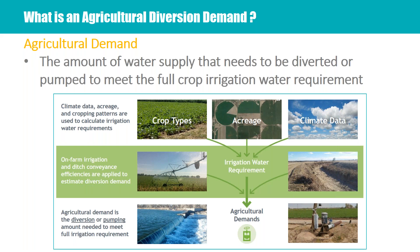It is important that we remember all of these individual components — acreage, IWR, and efficiency — because these are all the knobs that we can turn in the planning scenarios. That is really how we arrive at an agricultural diversion demand.